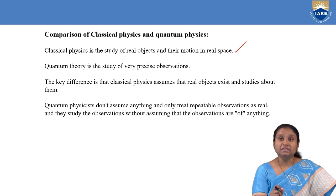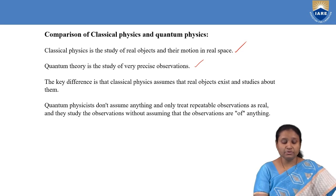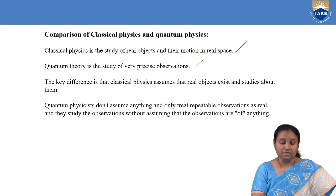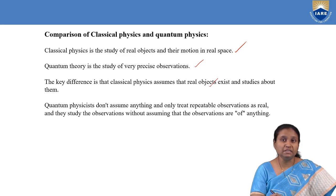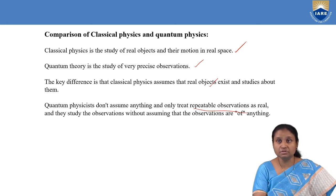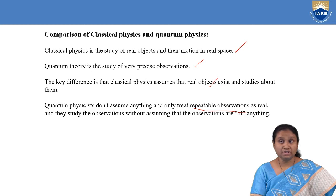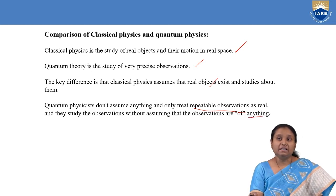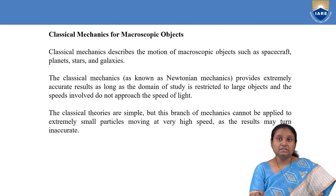When we are talking about atoms and their atomic dimensions, that is where quantum theory applies. A key difference is that classical physics assumes that objects are real — it studies those real objects. Whereas quantum physics, as we have seen, studies very precise observations that are repeatable and real. Quantum physics is postulated by taking those repeated observations into consideration.